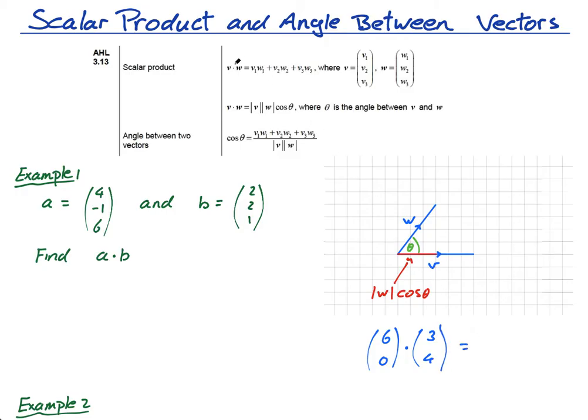The way I can get the dot product is this: it's v1 times w1 plus v2 times w2 plus v3 times w3. So quite simply, this times this plus this times this plus this times this if there was a k component. Six times three is 18 plus zero, which is just 18. The scalar product is when you multiply the two vectors, you get a scalar, which is why it's called a scalar product.